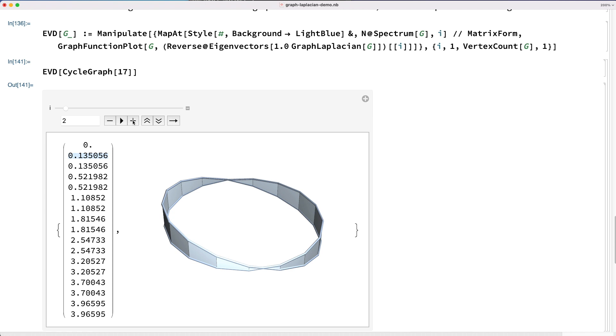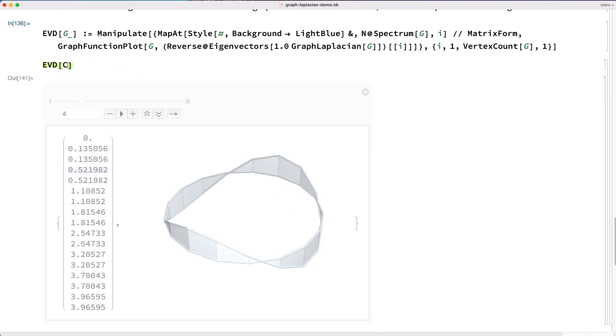So this effect where the higher eigenvalue eigenvectors vary more is why we call them high frequency eigenvalues and eigenvectors. Back at the other side, we call these ones the low frequency eigenvalues and eigenvectors.